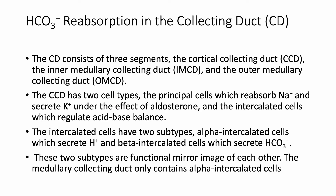The collecting duct has three segments: the cortical, inner medullary, and outer medullary collecting duct. In the cortical collecting duct there are two main cell types: principal cells, which reabsorb sodium and secrete potassium under aldosterone, and intercalated cells, which handle acid-base. Intercalated cells have two subtypes — alpha cells get rid of hydrogen, beta cells secrete bicarbonate — they are exactly the mirror image of each other. The medullary collecting duct does not have beta intercalated cells.